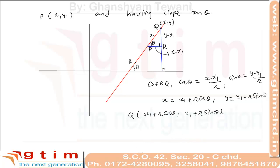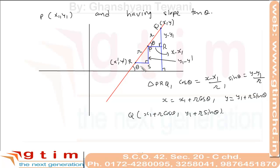If we want to find point R, then again draw the right angle triangle. This distance is r. Suppose coordinates of point R are (x', y'). Suppose this point is S. Then what is the length PS? The length PS is y1 minus y', and what is the length RS? That is x1 minus x'.